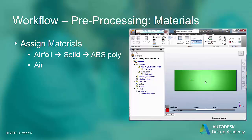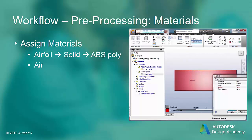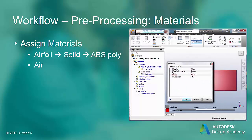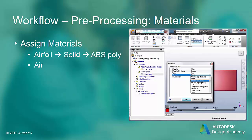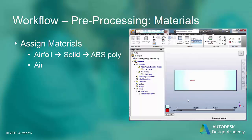For the air box around the airfoil, we are going to choose the material type to be fluid. You can see that there is a long list of different fluids to choose from, and if the material you are looking for is not on the list, you can add it. We find air and we are going to use air for our material type.